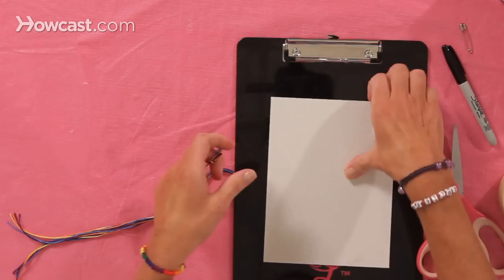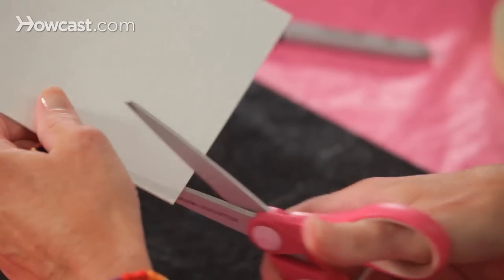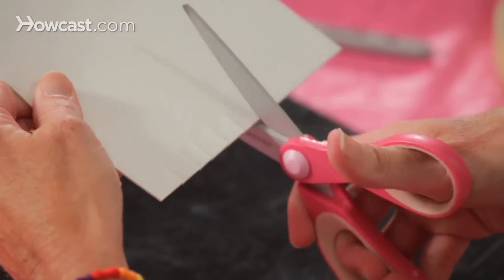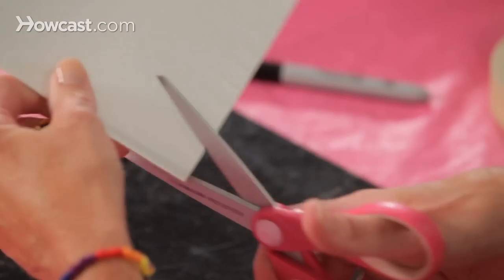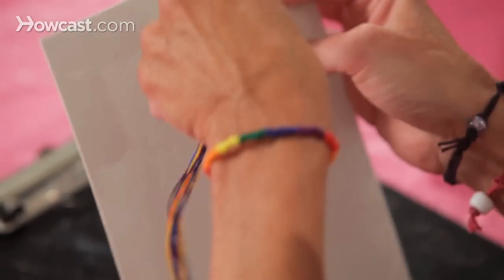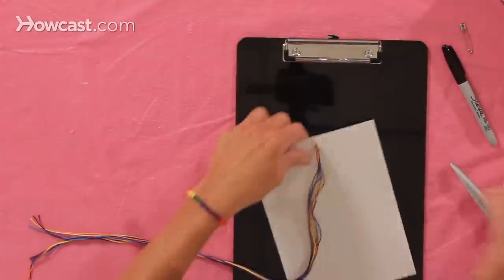After we have a knot in our string, we take our cardboard. We're going to put a slit at the top, and we're going to need several slits at the bottom, because we have to separate the strings across the bottom, all the individual colors. So we put the knot in the top, and we tape it around the back.